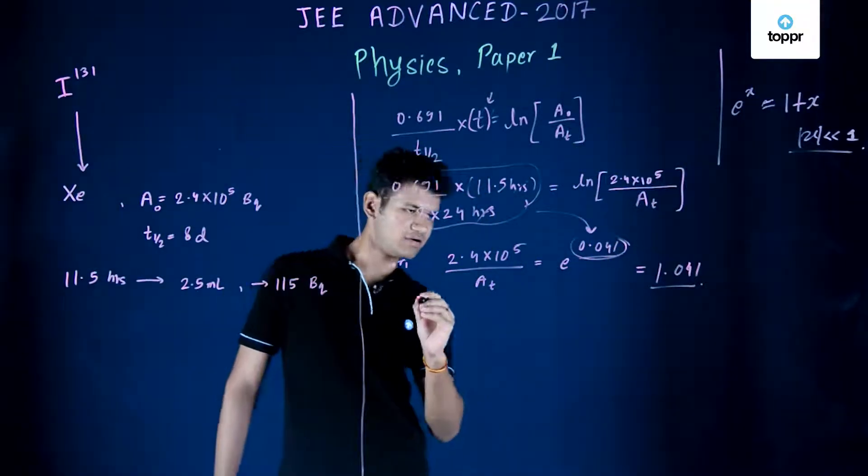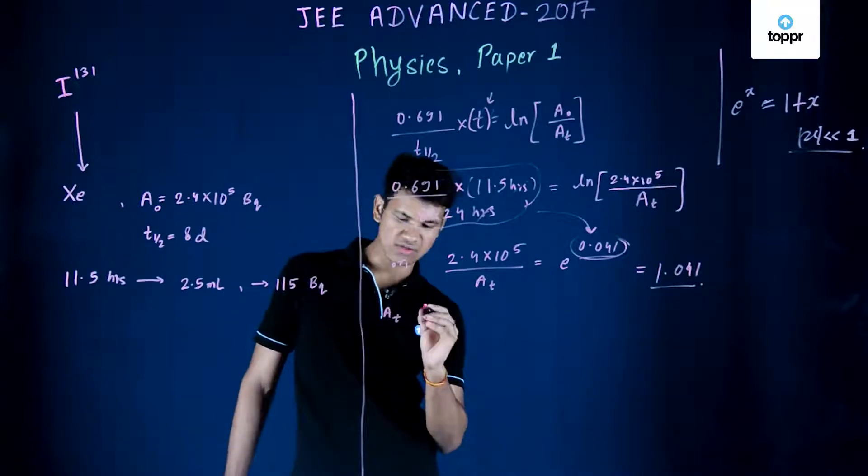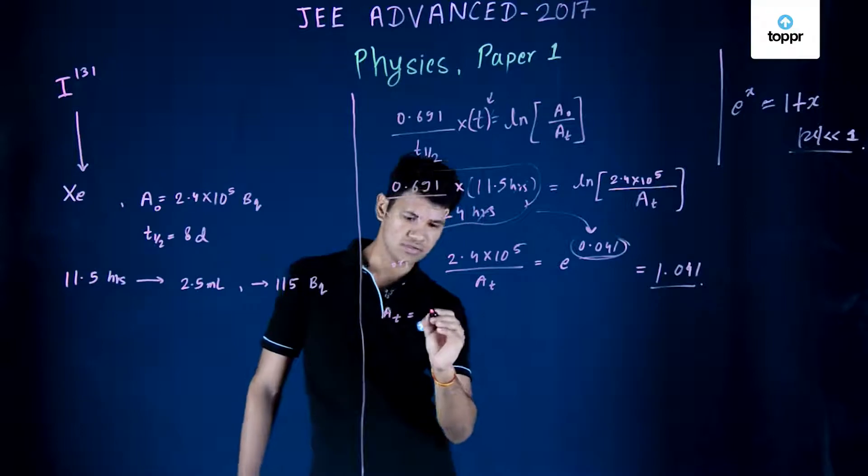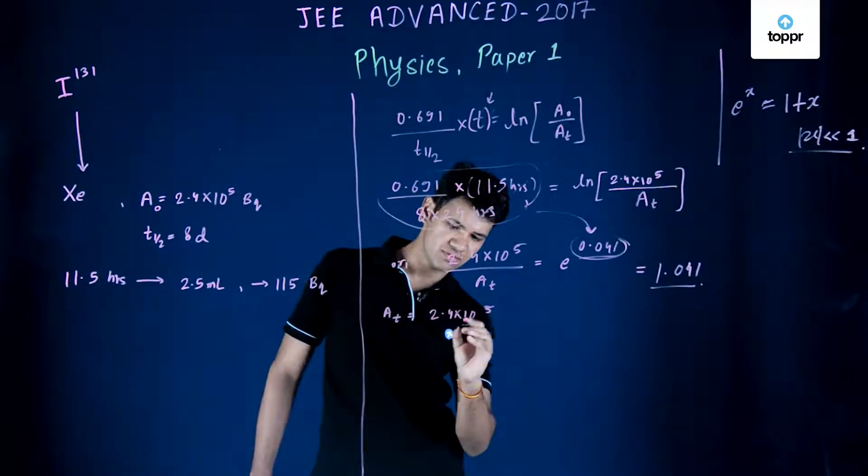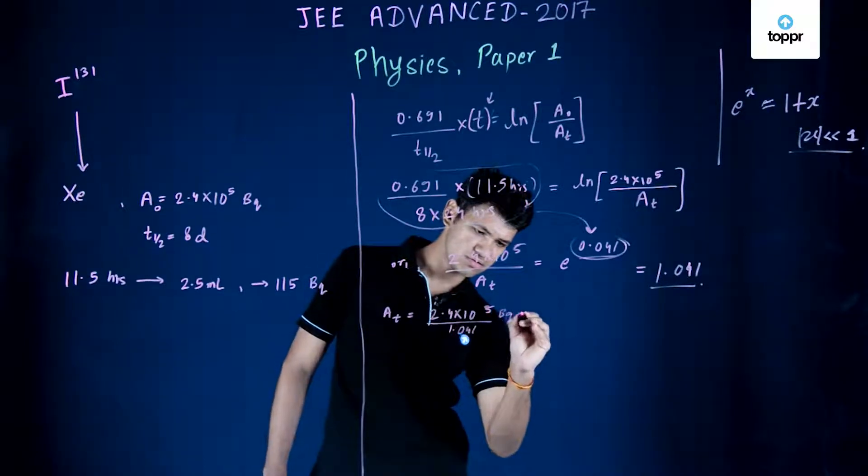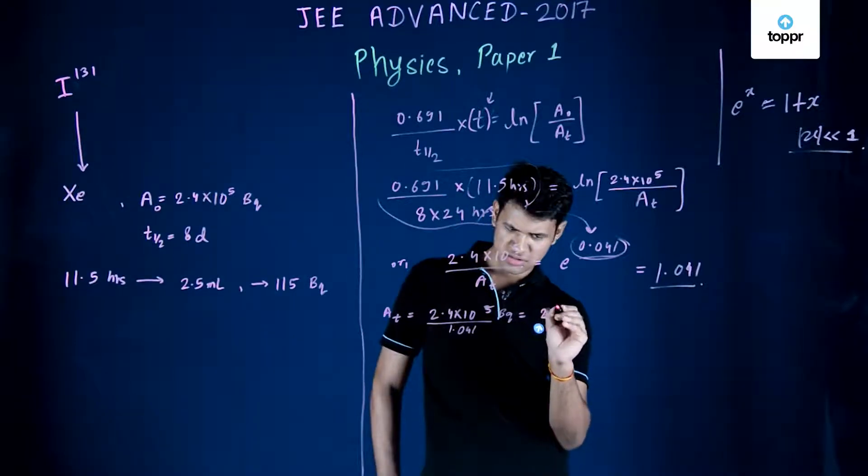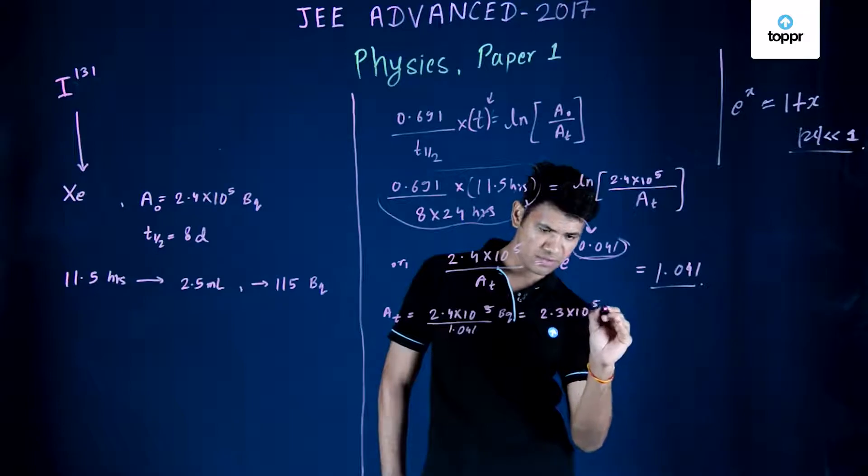So we have activity at that time which is 11.5 hours being 2.4 × 10^5 upon 1.041 becquerel. Simplifying this we get 2.3 × 10^5 becquerel.